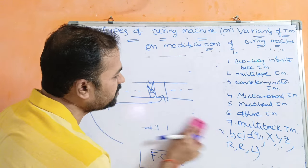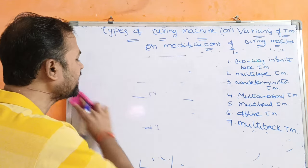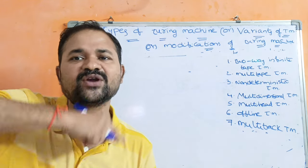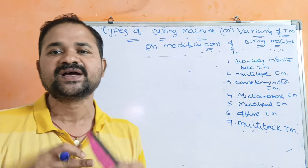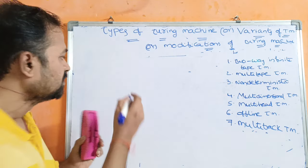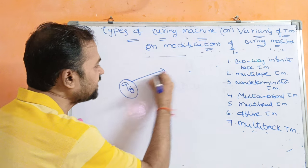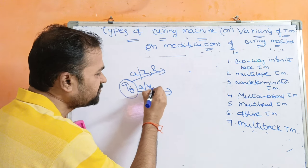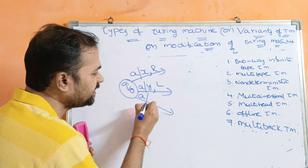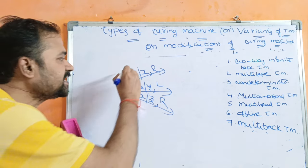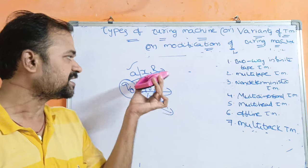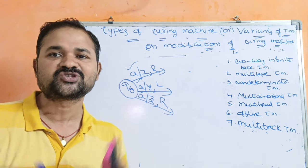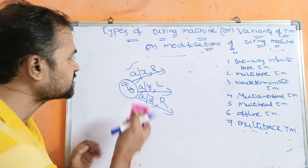The third type is the non-deterministic Turing machine. Till now we have seen deterministic Turing machines, where on applying an input symbol we can go only one way. In a non-deterministic Turing machine, instead of one choice we can have multiple choices. For example, from state q0 on input symbol a: in the first choice we replace a with x and move right; in the second choice we replace a with y and move left; in the third choice we replace a with z and move right. So instead of one choice, we can have multiple choices — this is the non-deterministic Turing machine.